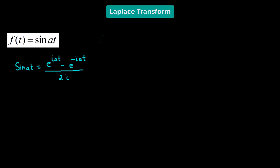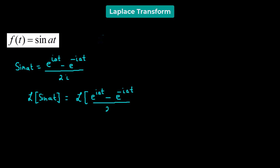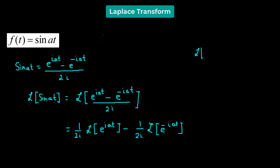Now we will take the Laplace transform on both sides, such that we get the Laplace transform of sine of at equals the Laplace transform of the Euler identity of the sine function, which is e raised to the power of iat minus e raised to the power of negative iat, whole divided by 2i. We will use the property of linearity. We know that the Laplace transform of the exponential function e raised to the power of at is 1 over s minus a, defined for s not equal to a.